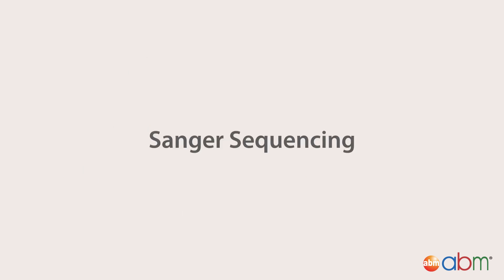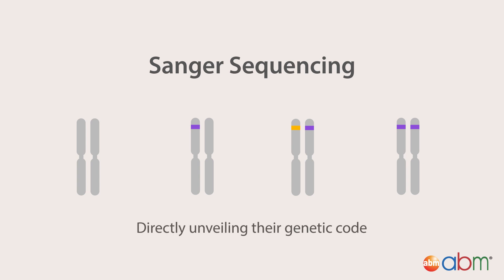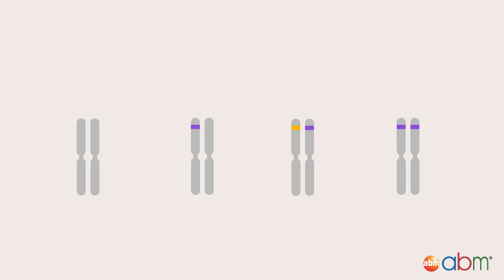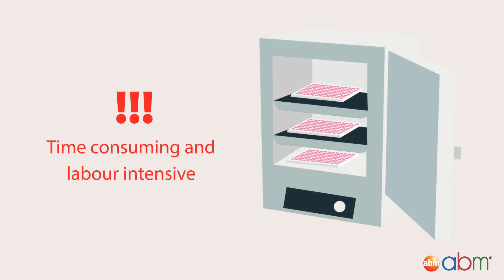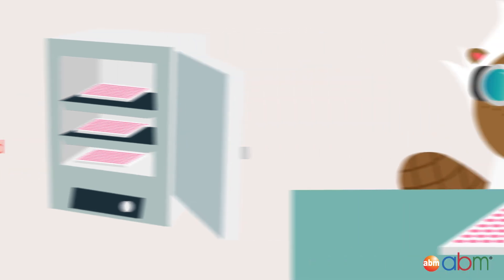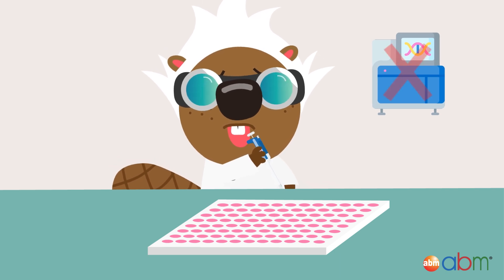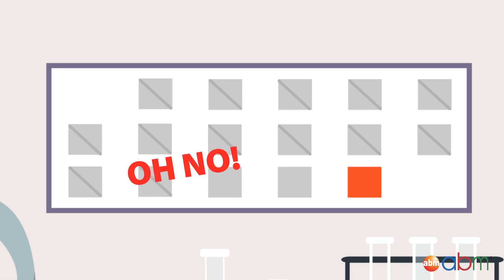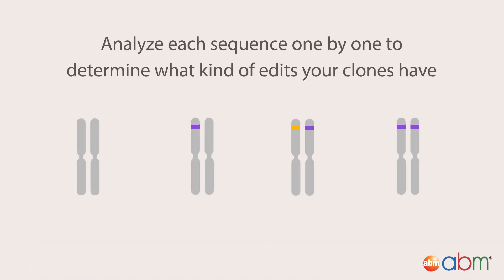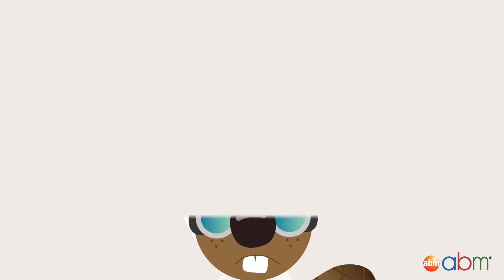Let's look into Sanger sequencing. This involves analyzing each clone to identify monoallelic, biallelic, and wild-type genotypes by directly unveiling their genetic code. But there's a problem: time. You have hundreds of clones which need to be screened, and this can be both time-consuming and labor-intensive. Even if you stayed up all night preparing hundreds of samples, they still need to be shipped out and sequenced if you don't have a sequencing machine. After that, you still have to wait several days for the results, and then align and analyze each sequence one by one. There must be a faster way.